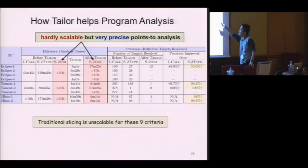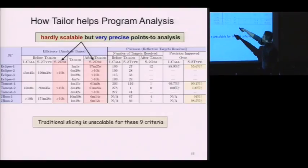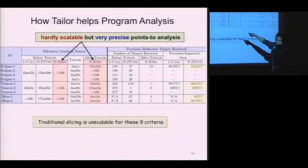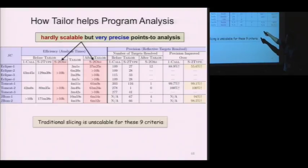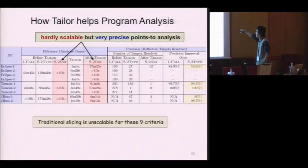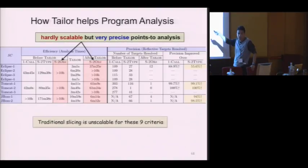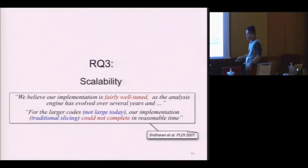These nine imprecisely resolved call sites could have been resolved precisely if we could use a very precise points-to analysis, because the precision of reflection analysis depends on the precision of its underlying points-to analysis. However, precise points-to analysis is difficult to scale for larger OO programs in practice. In our experiment, the most precise points-to analysis could not finish running within 10 hours for any of these nine cases before Tailor. But after Tailor, the program becomes smaller, and five out of nine cases became scalable. This allows us to re-run the precise points-to analysis, and the reflection analysis precision is significantly improved. Traditional slicing was not scalable for any of these nine criteria, but Tailor is scalable for all of them.